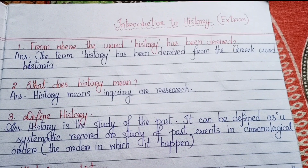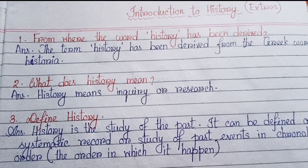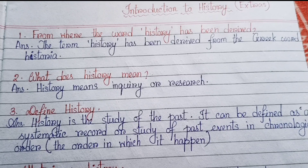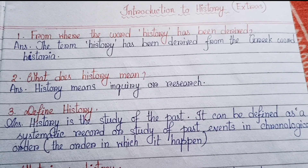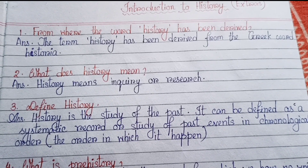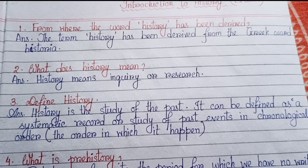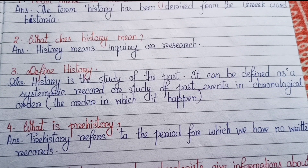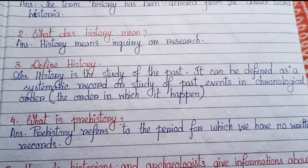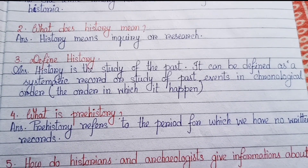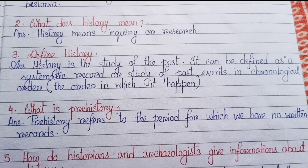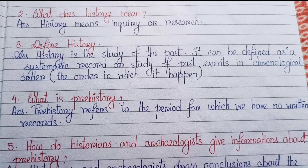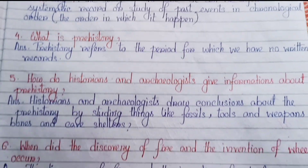Number one: From where has the word history been derived? The term history has been derived from the Greek word 'historia.' Number two: What does history mean? History means inquiry or research. Number three: Define history. History is a study of the past. It can be defined as a systematic record or study of past events in chronological order — that means the order in which they happened.